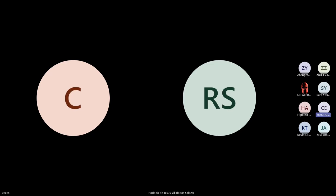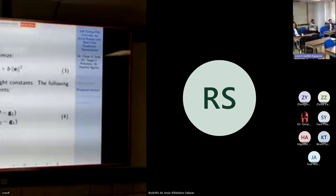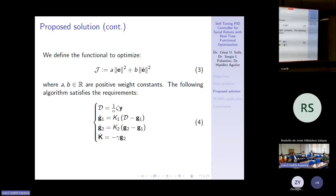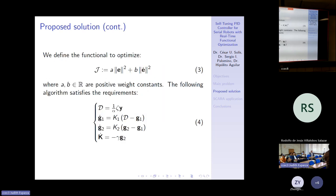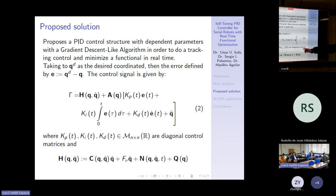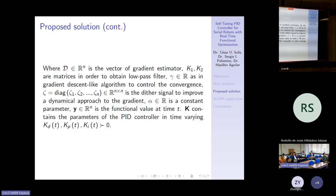The main algorithm proposed is in equation 4. It's a classical extremal-seeking algorithm with some additional filters given by G1 and G2. D is the vector of the gradient, G is the output, G1 and G2 is the output of the filters, and K is the output of the actualization of the gains of the controller. This is the structure basically.